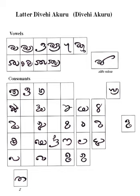The Davehi Akuru developed from the Grantha script. The early form of this script was Divi Grantha, which was named Evela Akuru by H.C.P. Bell in order to distinguish it from the more recent variants of the same script.